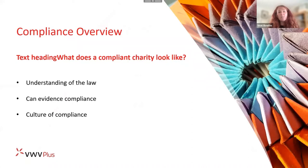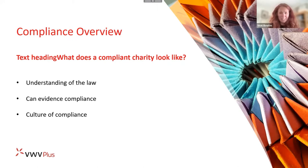So, what does a compliant charity look like? Essentially a compliant charity will be able to show three things: they have an understanding of the law, they can evidence that they comply with the law, and they have a culture of compliance. Understanding the law is the first step — ironically that's the easiest bit. You need to understand what your obligations are. Evidencing compliance is the second stage, which is the bit most people forget. The UK GDPR says it's not only enough to be compliant — you actually have to be able to demonstrate that you are.